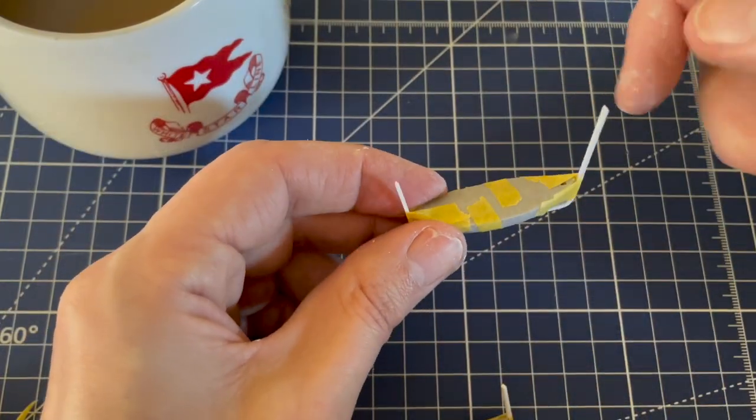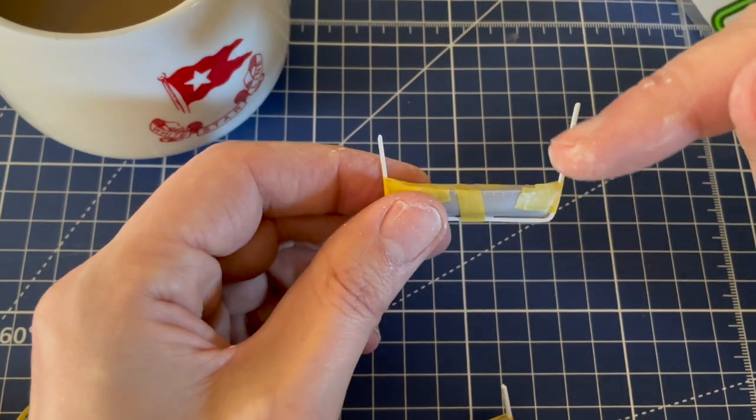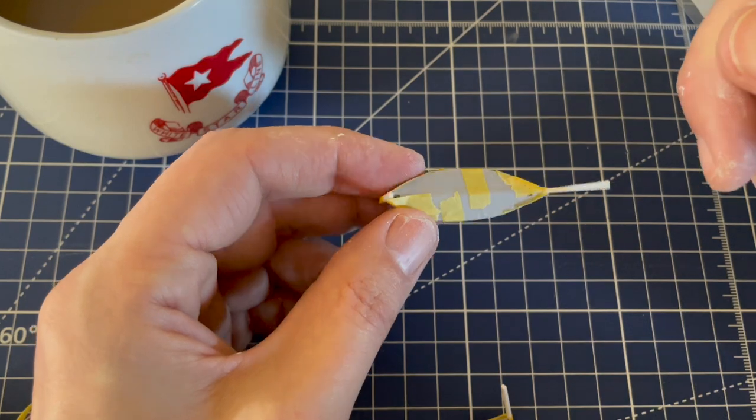So that's both sides done. Once the glue is dry, I can just snip off the ends and do a bit of filing just to neaten up, and that's then ready for undercoating.